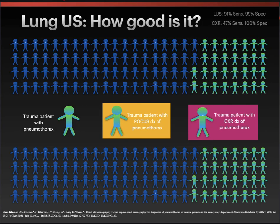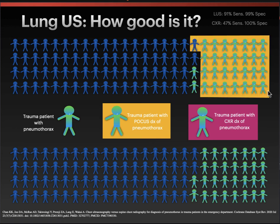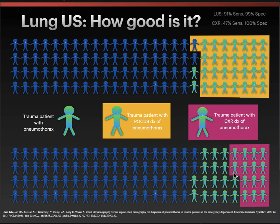This brings us to lung ultrasound — how good is it? If you have 100 patients and 28 have a pneumothorax, your ultrasound will diagnose almost all of them — you'll miss two, but overdiagnose only one. Contrast that with chest x-ray: given the same patient distribution, chest x-ray will diagnose not even half of the patients who have pneumothorax, but at least won't overdiagnose anybody. You can see why lung ultrasound has become more widely used in settings where getting patients to CT scan quickly isn't always available.